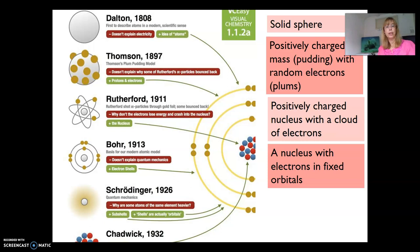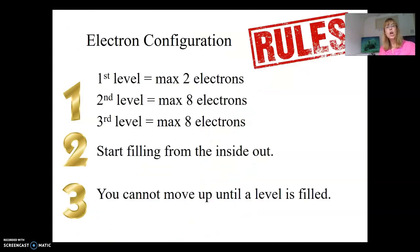Bohr came up with the idea that electrons aren't just a cloud around the nucleus but are found in fixed spheres or orbitals or electron shells. Schrodinger defined these shells as energy levels, and Chadwick in 1932 discovered the neutron in the nucleus.